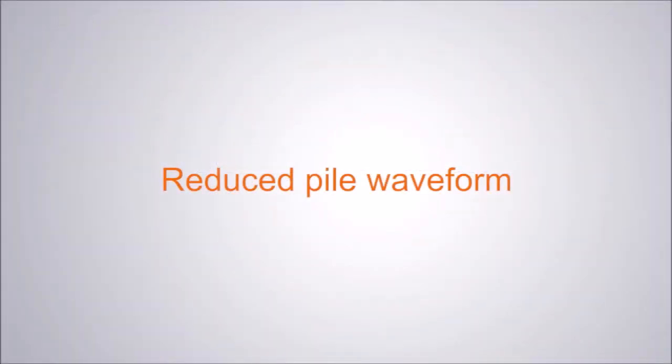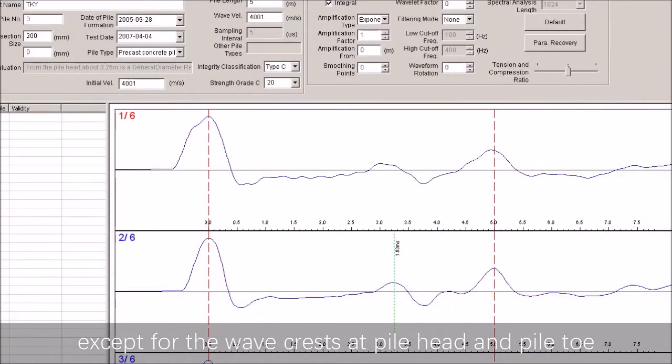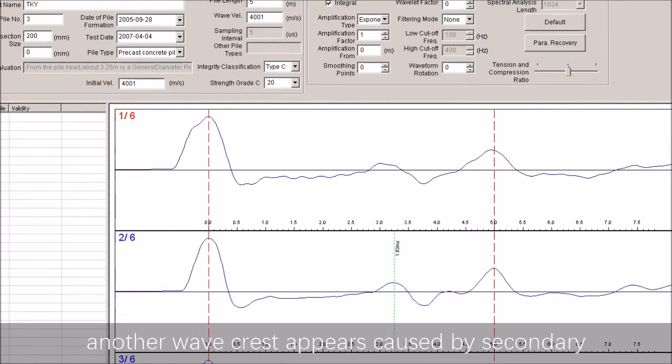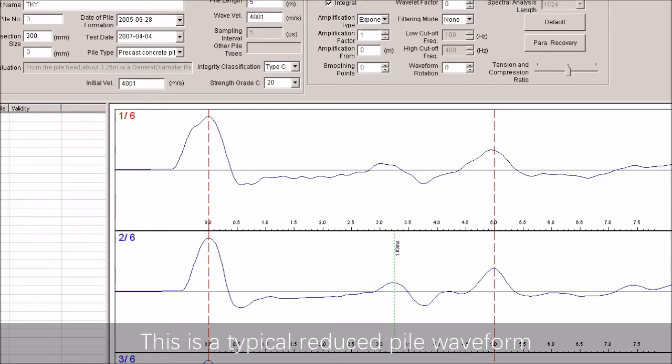Reduced pile waveform: Except for the wave crest at pile head and pile toe, another wave crest appears, caused by secondary reflection of the reduced pile. This is the typical reduced pile waveform.